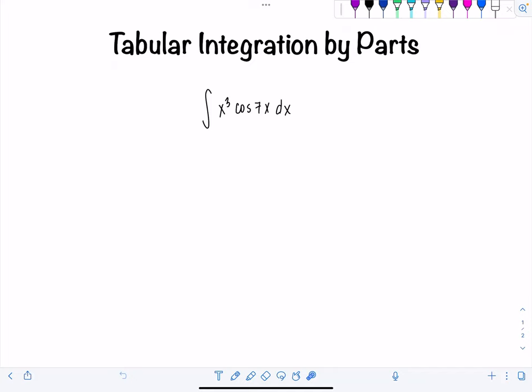So let me show you what you do just with this example. So normally we pick u and dv, right? And similarly, you're going to pick one part of your integral that you're going to keep differentiating. That's basically what u would have normally been. So that's x cubed here. And then the other part I'm going to anti-differentiate. That's what dv would normally be. So I'm writing cosine 7x here. You don't need the dx. So to start off, what you do is you keep differentiating x cubed repeatedly in this column until you get zero.